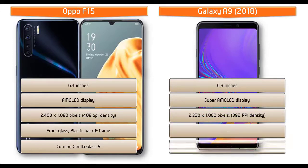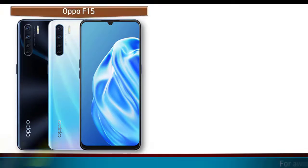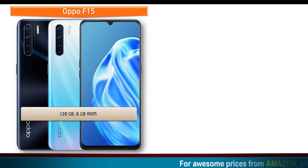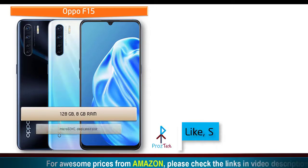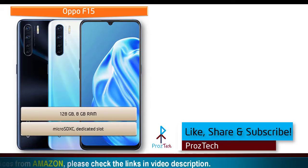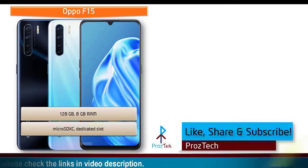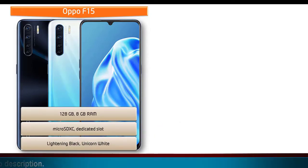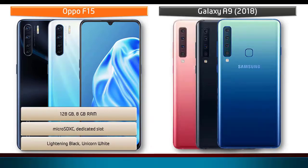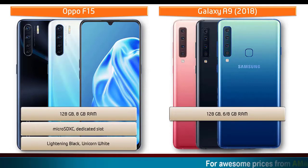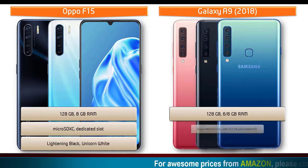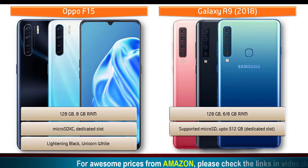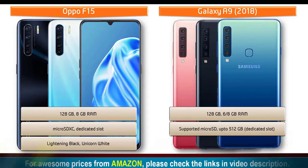Galaxy A9 also comes with Samsung Pay. Talking about internal memory, Oppo F15 is available in 128 GB primary storage with 8 GB RAM and supports Micro SDXC with a dedicated slot. Galaxy A9 comes with 128 GB primary storage with 6 or 8 GB RAM, and up to 512 GB micro SD support is also available as a dedicated memory slot.